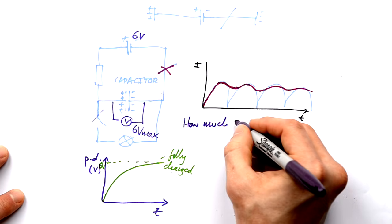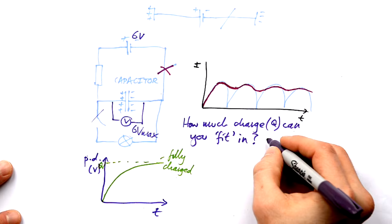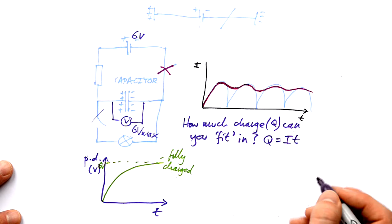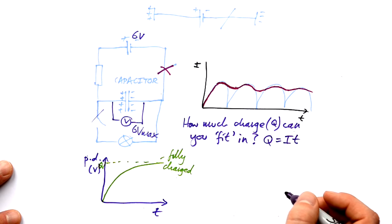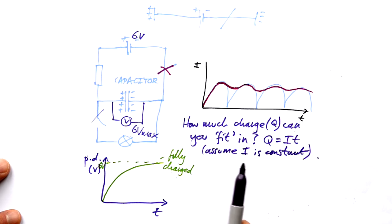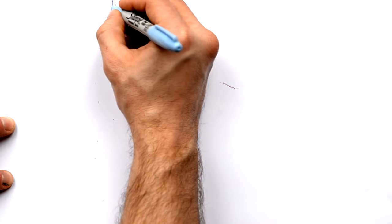So how much charge can you fit into a capacitor? This depends on the capacitor. To find out we use charge equals current times time (Q = It). The problem is we have to assume the current is constant. In reality the current changes — it ultimately drops to zero when the capacitor is fully charged — but more often than not we start with the assumption that current is constant.